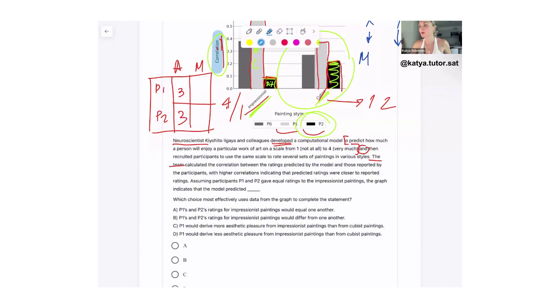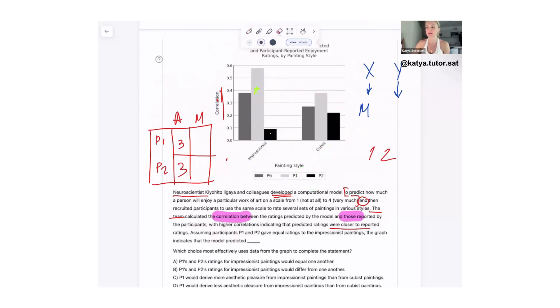And then what did they do? They recruited people to rate it. And then the team calculated, drumroll, correlation between the ratings predicted by the model and the ratings reported by the participants, with higher correlations indicating the predicted ratings were closer to reported ratings. Oh wait, it says it right here! I know! Oh I completely skimmed over that! Oh my god! Assuming participants one and two gave equal ratings to impressionist paintings, participant one correlation high, participant two correlation low. What can you infer? Oh my god, that's so simple now that you say it, it would just be B then, right?